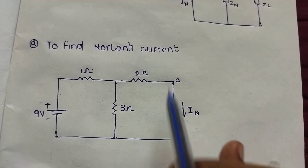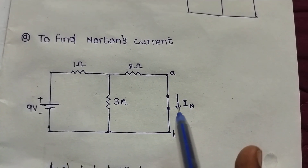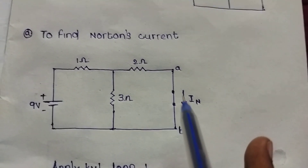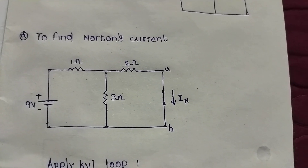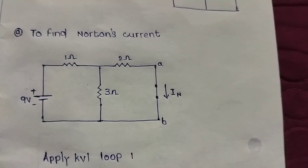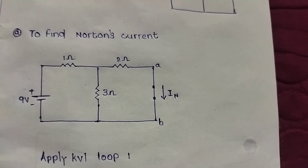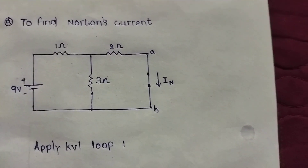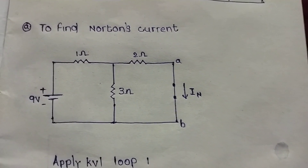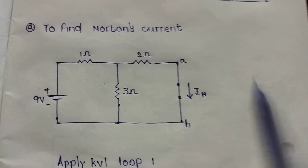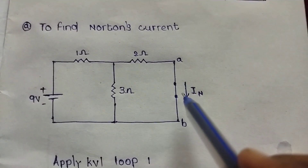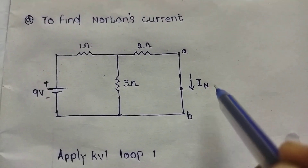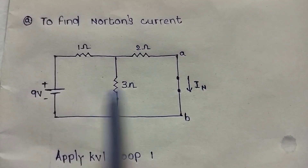The load resistance is short-circuited at the terminal. Norton's current can be found by using any method — we can use the current division rule, voltage division rule, mesh analysis, super mesh analysis, or anything. We maintain this particular terminal and find the IN current flow.